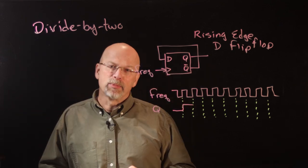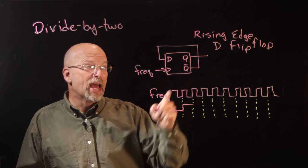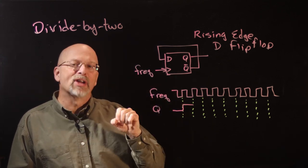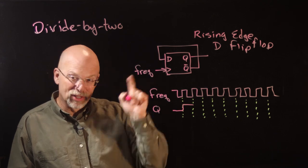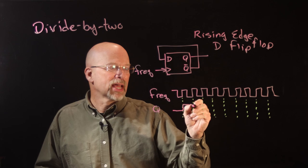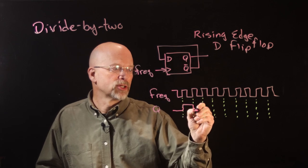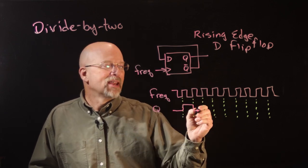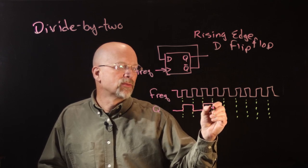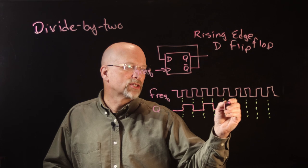So now, at this point, a one is on Q, and a zero is on Q bar. So coming into the D input, you've got a zero, the opposite of what's stored in the box. So we get another rising edge here, and a zero is going to be stored to Q. And in fact, at every one of these rising edges, we're just going to take the opposite of what's in Q and store it to Q.